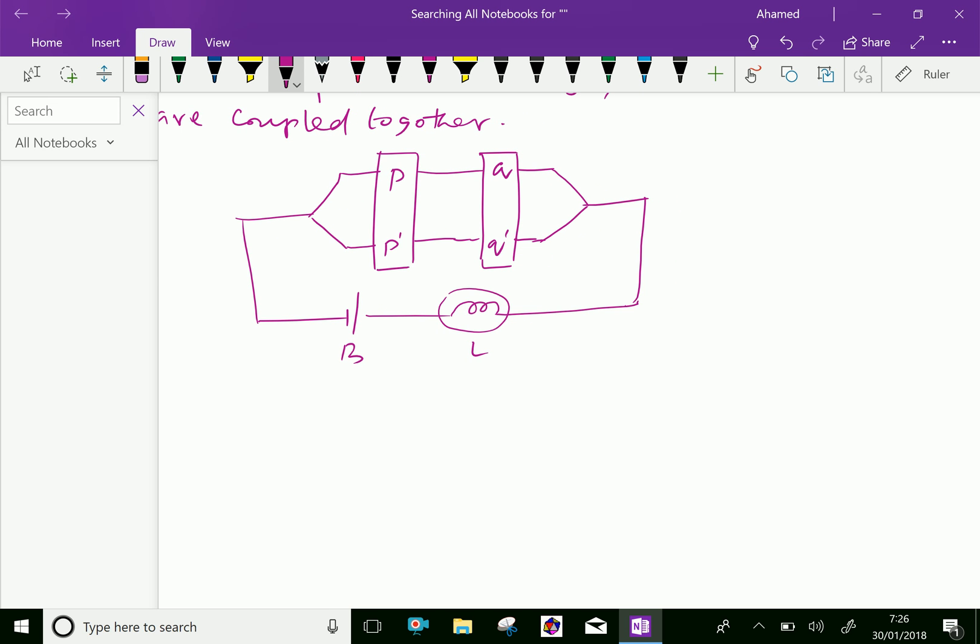Here, when the switch P is open, when the switch P is open and P dash is closed. Means the switch P is open means off. If switch P is off, then switch P dash is on, means it is closed. Similarly, if P is closed, then P dash is open, vice versa.